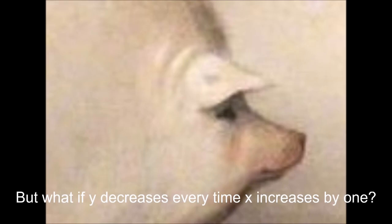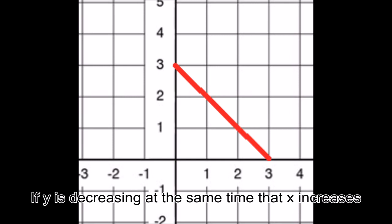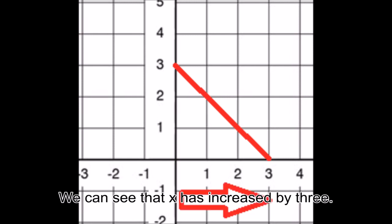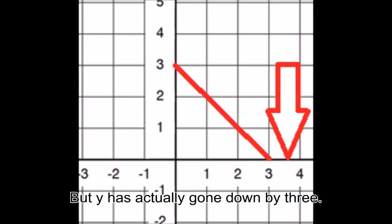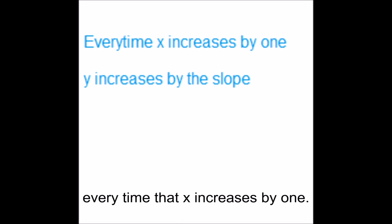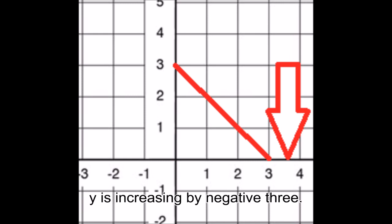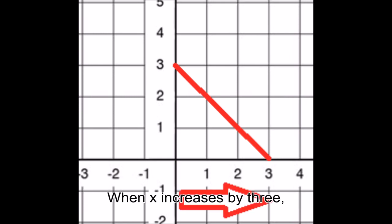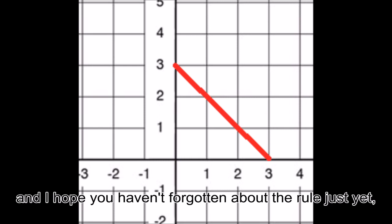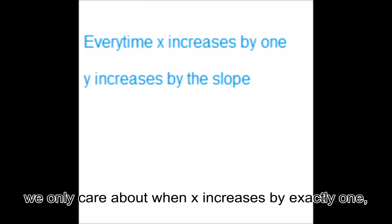But what if y decreases every time x increases by 1? If y is decreasing at the same time that x increases, you still find slope the same way. Let me explain. We can see that x has increased by 3. But y has actually gone down by 3, it has decreased. But don't forget the rule. The slope is equal to how much y increases. Every time that x increases by 1, we have to find out how much y is increasing. So the answer is that y is increasing by negative 3. This is what we call a negative slope. When x increases by 3, y increases by negative 3. And I hope you haven't forgotten about the rule just yet. We only care about when x increases by exactly 1.